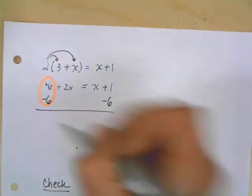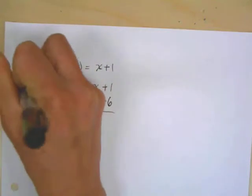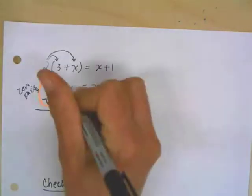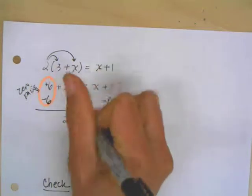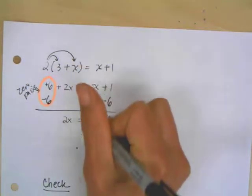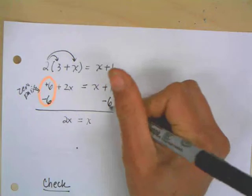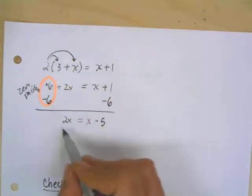And then how is that helping me? Well, this here, plus 6 and minus 6, this is one of our zero pairs. So that's now gone. So now we have 2x equals, and I'm bringing everything straight down, equals x plus negative 6 is negative 5.